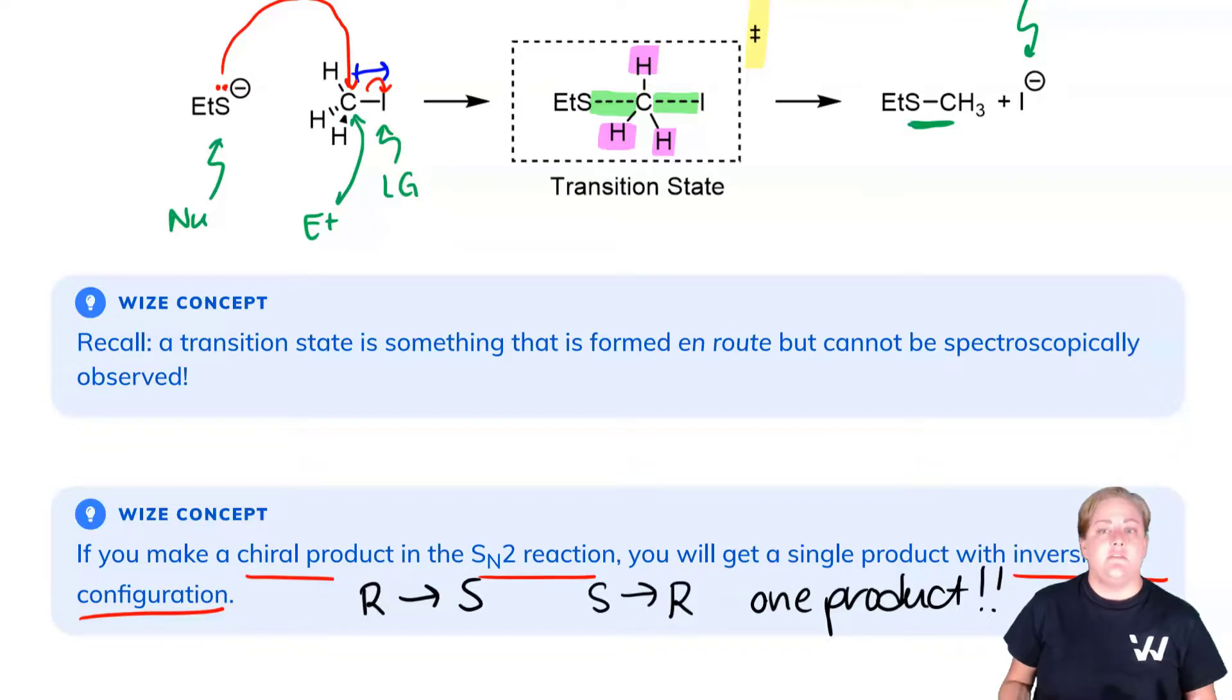If I started R, I make S. If I started S, I make R. This is different than the SN1 reaction where we attack the carbocation across two steps, and if we were to make something chiral, we get two products in a racemic mixture.